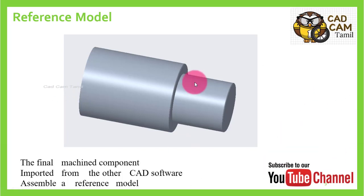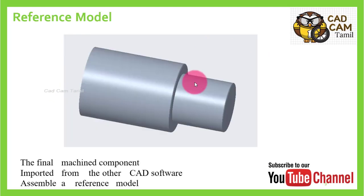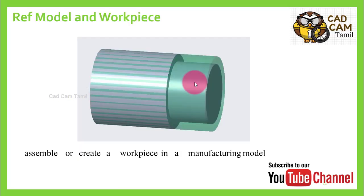If you look at the turning operation, we can complete the turning operation — turning or facing operation. We can do the facing, turning, and chamfer. If you have raw material of 150mm length, you can turn the raw material. The reference model sits under the workpiece. The workpiece is shown in green color in the manufacturing module.